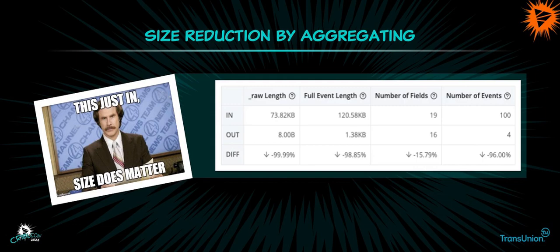We're sending all this aggregated data out into our single environment to where we could look at it in that single pane of glass view. The size reduction was pretty surprising — that full event length column is pretty good. We knew that because we were throwing out a lot of unnecessary data and just distilling out what we really cared about we were going to have reductions, but we weren't expecting this type of reduction — down almost 98 to 99%. We're sending 120 kilobytes in and 1.3 kilobytes out for just about that 99% reduction. Pretty good.